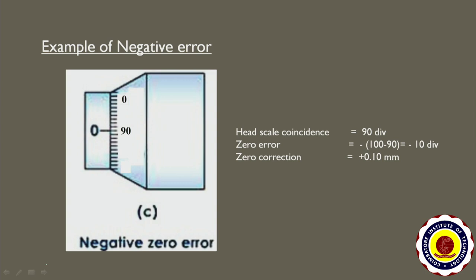In this diagram we see an example of negative error. The zero of the pitch scale coincides with the 90 of the head scale. In this case, the head scale coincidence equals 90 divisions, zero error equals minus (100 minus 90), which is minus 10 divisions. Hence the zero correction equals plus 0.10 mm.